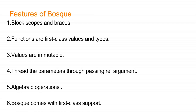The fourth feature is threading the parameter through by passing reference arguments. This simplifies situations where a variable is passed to a method that may use and update it. The fifth feature is algebraic operations, which are available for data types including double, record, and nominal types, and also for operations that include projection, multi-update, and merge bulk algebraic data operations.